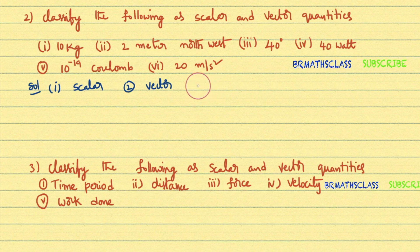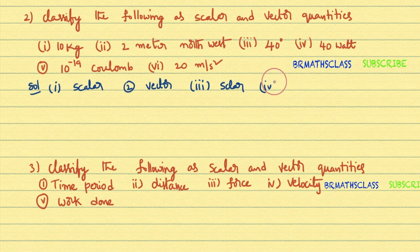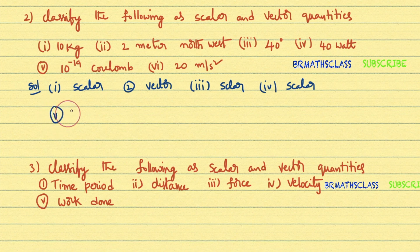Third bit: 40 degrees — that is temperature. Temperature has only magnitude and no direction. In which direction is the room temperature 40 degrees? You cannot ask that, so temperature is a scalar. Fourth bit: 40 watt — that is also only magnitude, so 40 watt is a scalar quantity. Fifth bit: Coulombs — in physics, Coulombs is a constant, and every constant is treated as a scalar.